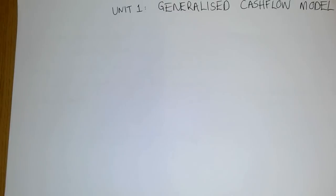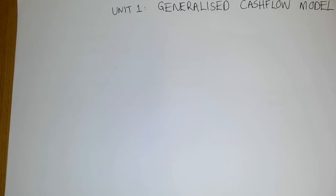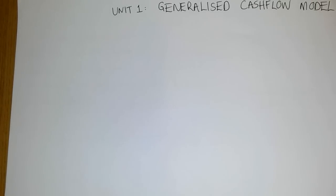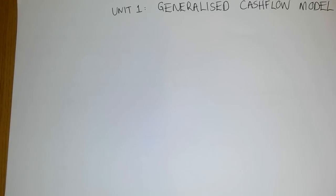Hello and thank you for visiting my channel. I'd like us to start off on Unit One, which is Generalized Cash Flow Models. As you know, actuaries often have to manage various cash flows. The first question that comes to mind is: what is a cash flow? Well, a cash flow is made up of sums of money paid or received at different times.